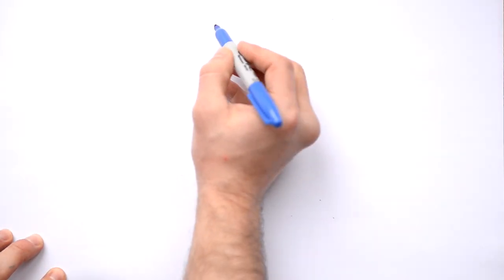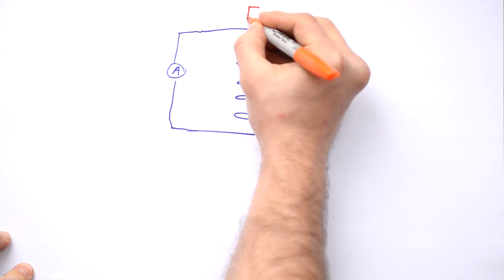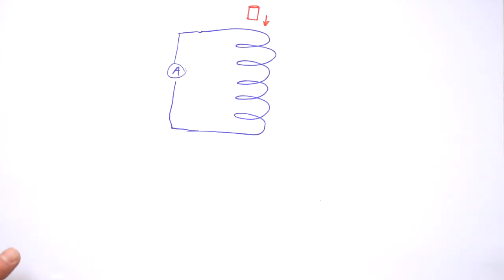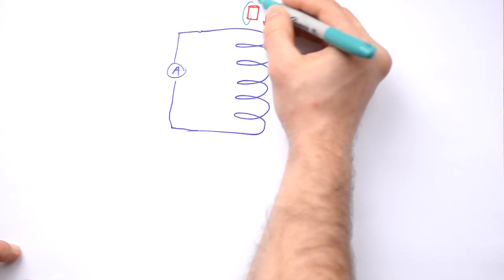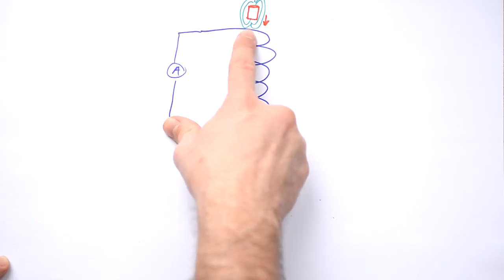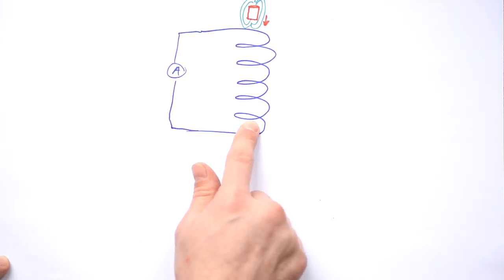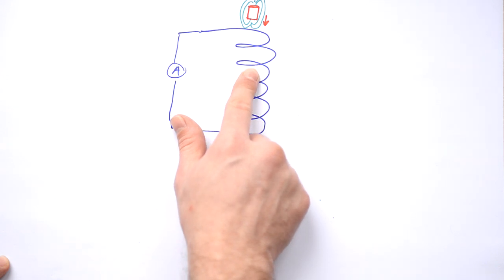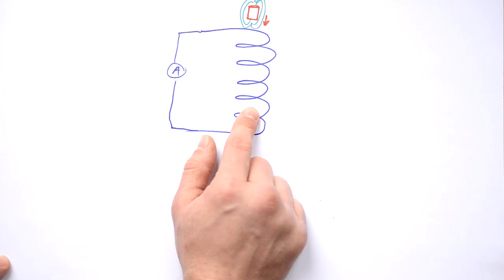There's no better example of Lenz's law than when we have a coil of wire — a solenoid — as part of a circuit, and we drop a magnet through it. This magnet has its own permanent magnetic field. As the magnet falls through, the flux of the magnet cuts the wire — or we can say the wire cuts through the flux. Either way, the wire experiences a change in flux, so a current is going to be induced.